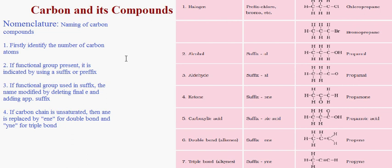Rule 2: If a functional group is present in the compound, it is indicated by using a suffix or prefix in the name of the compound. For example, if alcohol is attached to a chain then it is used as a suffix. The name is modified by deleting the final 'e' and adding the appropriate suffix.